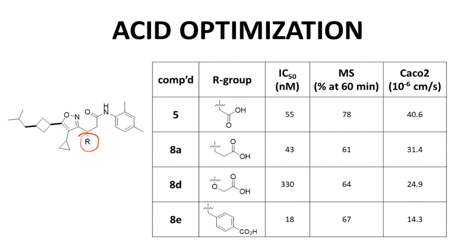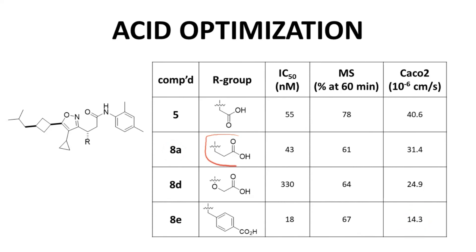Moving to the acid side chain, compound 5 served as the baseline. The discovery group examined a number of different side chains. The most potent compound in this series was 8E, but the loss in membrane permeability was deemed too great. In the end, compound 8A — with just one additional carbon from compound 5 — was selected. Compound 8A has a modest gain in potency with some loss in metabolic stability and permeability, reflecting that boosting potency is the main priority while minimizing losses elsewhere.